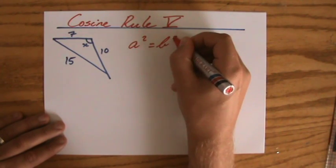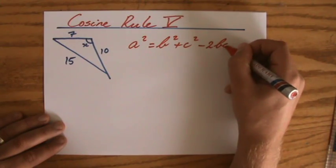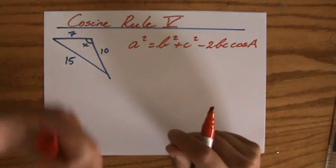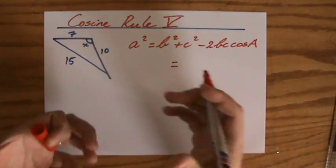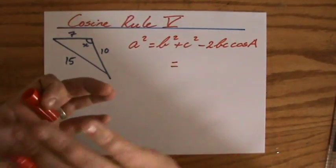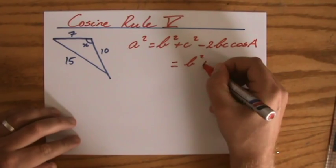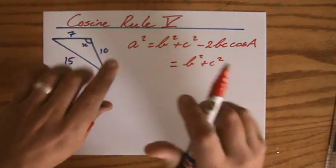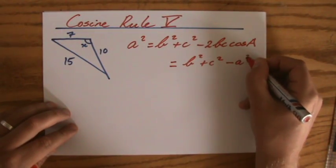Cosine rule. A squared equals B squared plus C squared minus 2BC times the cosine of A. Considering we are looking for the angle now, I'm going to rearrange the cosine rule a bit. Start with the equal sign. So it says the cosine of A equals and then everything else. So I'm leaving the B squared and C squared where they are. I'm going to move the A squared to the other side. So the sign changes minus A squared.